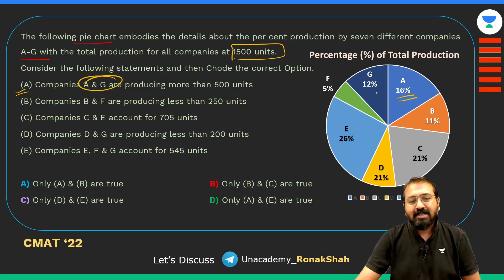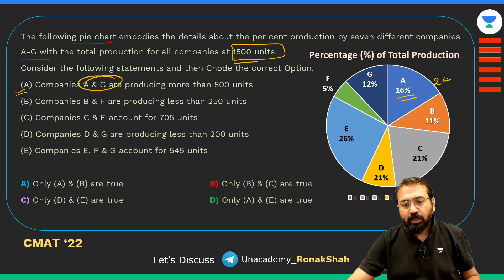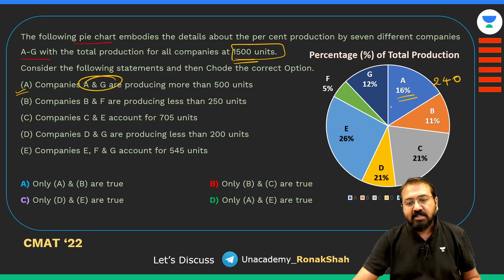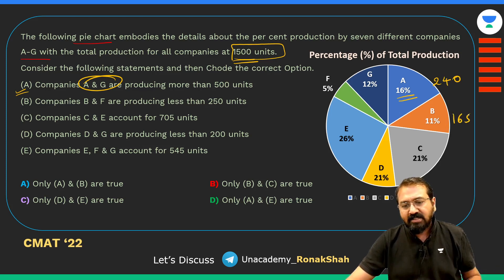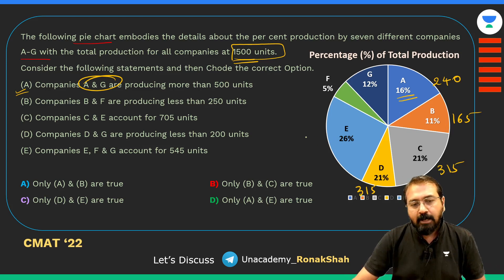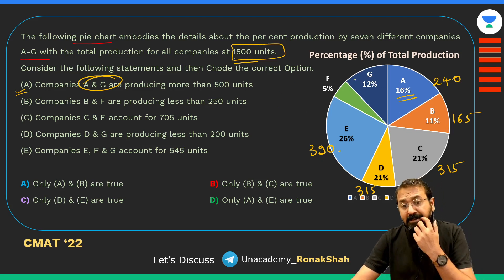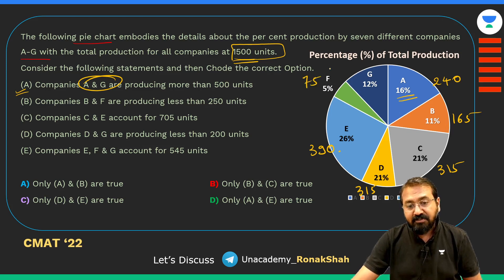If you look at the value of A, it's 16%, so 16% of 1500 is 240 units. Similarly, 11% gives 165. Then 21% gives 315, another 21% also gives 315. 26% gives 390 units (since 25% of 1500 is 375, plus 1% which is 15, equals 390). F is 5% giving 75, and G is 12% giving 180.